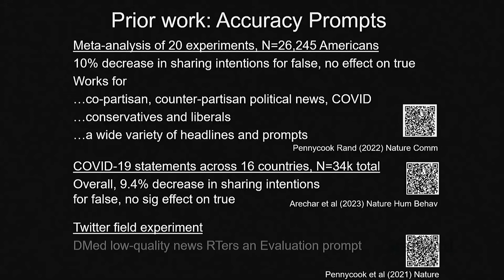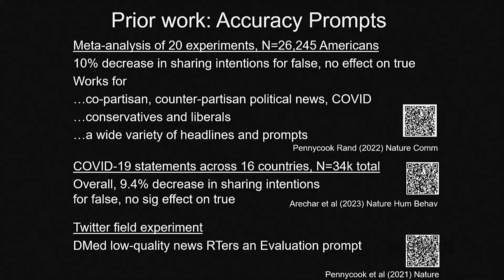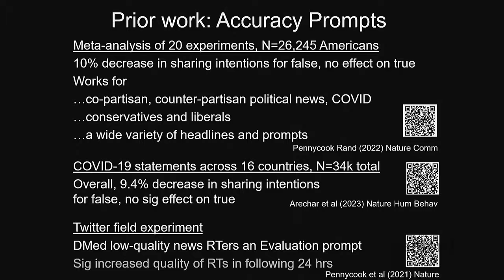We also had a small-scale Twitter field experiment where we found about 5,000 users who had shared links to low-quality news sites and sent them a private message with the same treatment — showing a random headline and asking how accurate they thought it was. We then looked at what they shared in the 24 hours afterwards and found it significantly improved the quality of what they were retweeting.